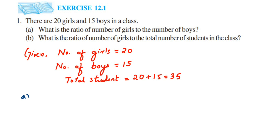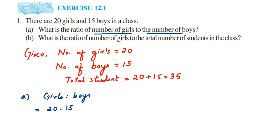The first question asks for the ratio of number of girls to the number of boys, so the ratio is girls to boys. There are 20 girls, so it's 20 is to 15. This is not in reduced form, so we have to simplify it. Ratios can be written in fractional form, so this becomes 20 by 15.